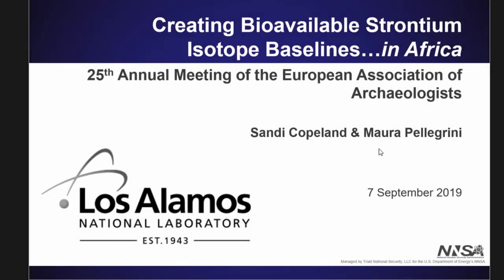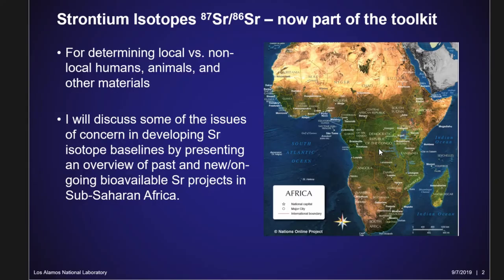I tagged on the last preposition to my title recently, so I'm going to talk about creating bioavailable isoscapes — strontium isotopes — which now seem to be part of the archaeological toolkit, fairly standard for determining local versus nonlocal humans, animals, and other materials. In this talk, I'll discuss some of the issues of concern in developing strontium isotope baselines by giving you an overview of some past and new and ongoing bioavailable strontium projects in Sub-Saharan Africa.